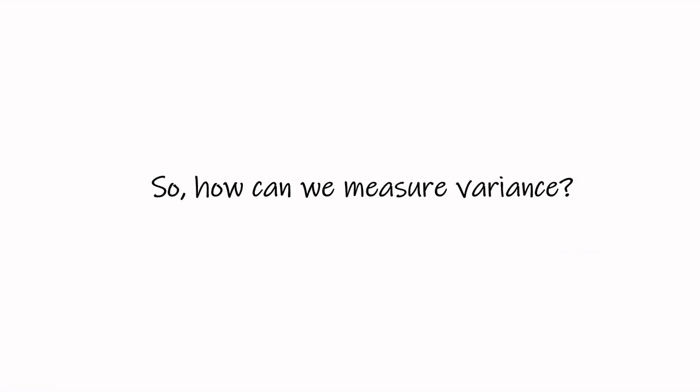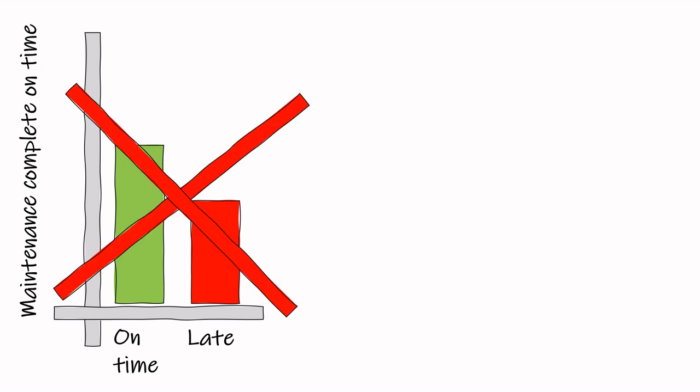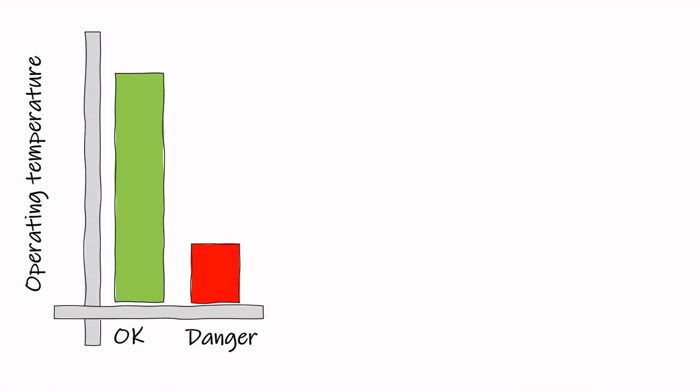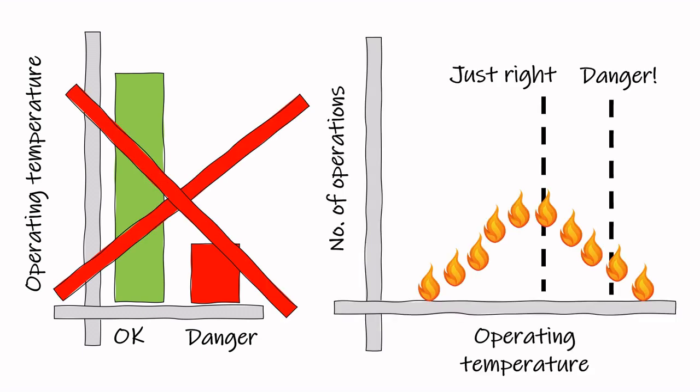Begin by looking at your performance indicators for safety-critical activities. Are they only measuring the outcome? What do they tell you about the variation in performance that leads to that outcome? For example, instead of measuring whether routine maintenance is completed to schedule, you could try to measure how many days before or after the schedule maintenance is completed — what might this tell you about how organized or well-resourced the maintenance program is? Instead of measuring how often operating temperature levels exceed a certain threshold, you could try to measure the variation in temperature relative to that threshold: how close to the edge are you operating?